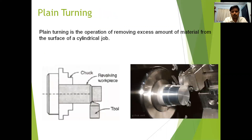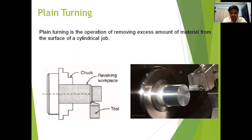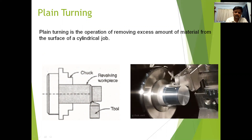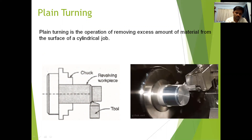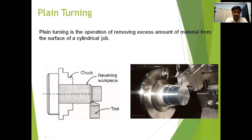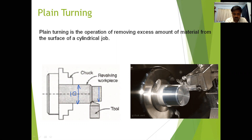First one is plane turning. Plane turning is the operation of removing excess amount of material from the surface of a cylindrical job. We are removing the excess material throughout the surface of the workpiece. For example, the diameter of the workpiece is 10 mm, and we are going to remove 2 mm of material from the diameter and maintain the finished diameter as 8 mm.